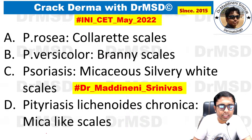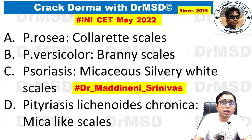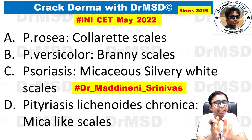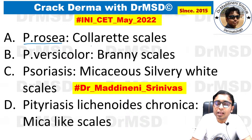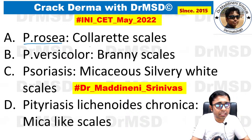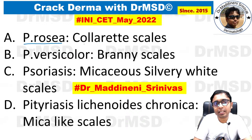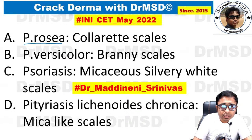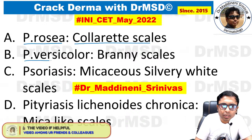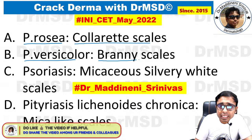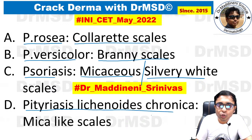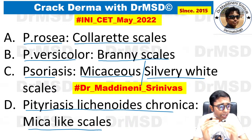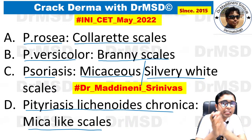This was one of the questions which students told me was asked as a match-the-following type. You need to match these diseases and the scales which can be seen in each condition. In Pityriasis rosea, collarette scales are seen. In Pityriasis versicolor, earlier called Tinea versicolor, bran scales are seen. In Psoriasis, micaceous or silvery white scales are seen. And in Pityriasis lichenoides chronica, mica-like scales are seen. These are all the correct matches.